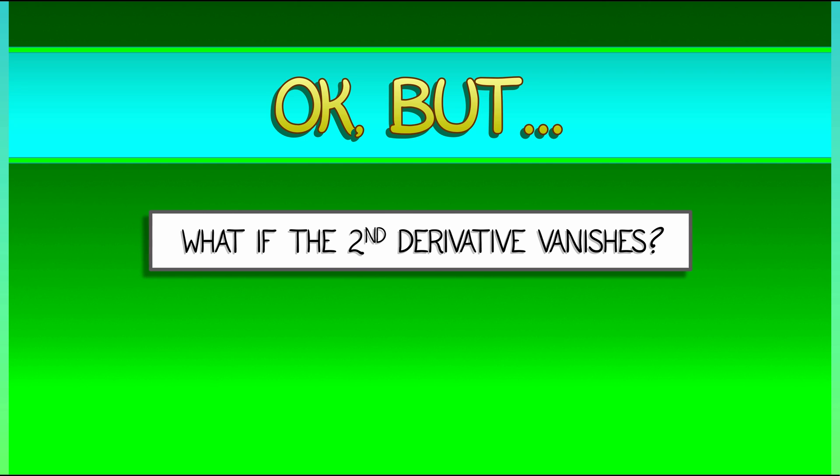Now we understand the second derivative test for classifying an optimum, but what if the second derivative vanishes? What if that test fails?